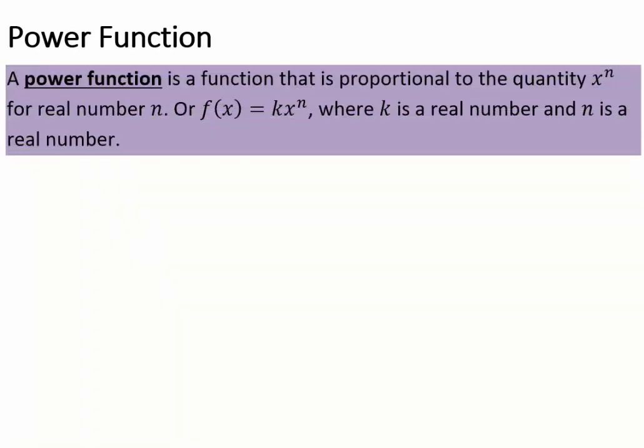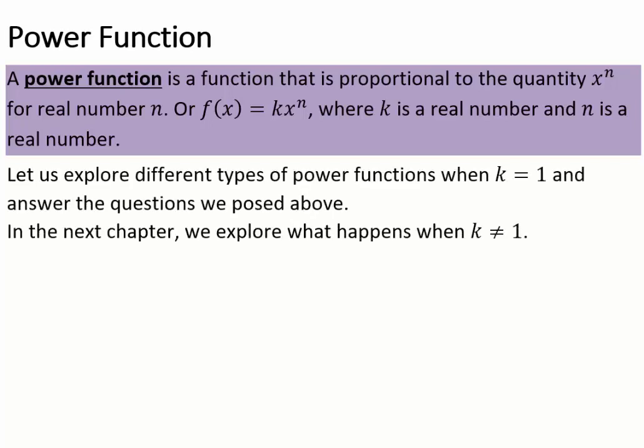Let's take a look at the formal definition of a power function. A power function is a function proportional to x to power n for any real number n. So f(x) = k·xⁿ, where k can be any real number and n is a fixed real number. To explore these functions — their inverses, domain, range, and graphs — we will set k equal to 1 for now and can change it later.